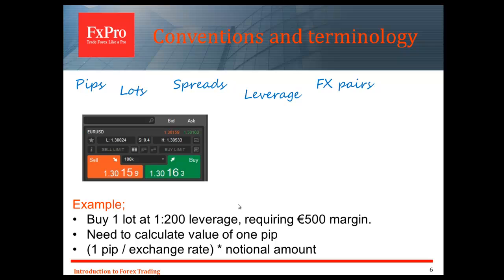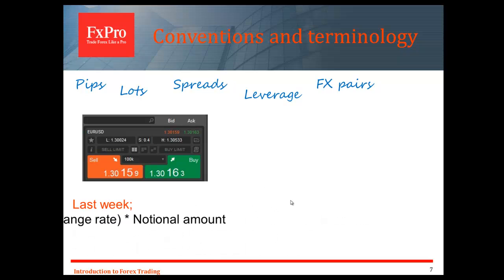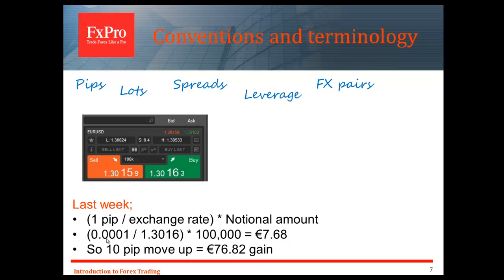We can calculate PIP value using a simple formula. There are apps and tools online, and an MT4 plugin as well, to calculate that notional value — the value of one single PIP. On EUR/USD, one PIP is equivalent to 0.0001. We divide that by the exchange rate and multiply by the notional amount. For one lot, that gives us $7.68 per PIP, so a 10 PIP move up would be $76.82 in this example. You can use tools on the FX Pro website — just search 'FX Pro tools'. Ctrader will also calculate it automatically once a trade is open, but you can use those tools to work out your risk before you jump in.